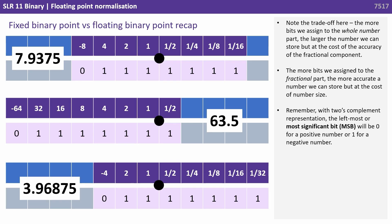Note the trade-offs here. The more bits we assign to the whole part, the larger the number we can store, but at the cost of the accuracy of the fractional component. The more bits we assign to the fractional part, the more accurate a number we can store, but at the cost of the number's size.